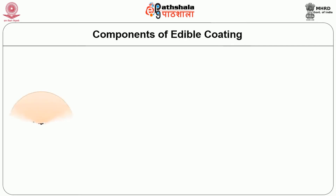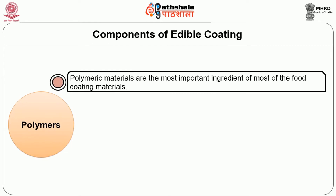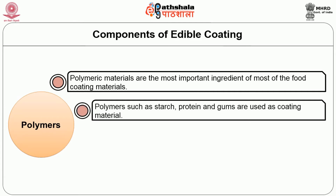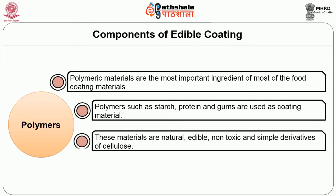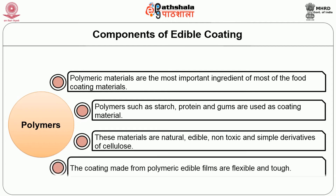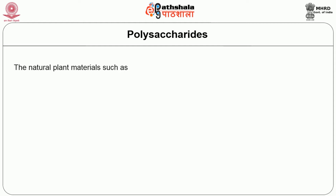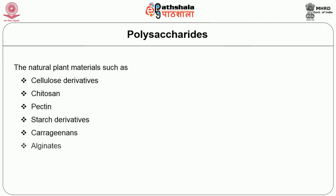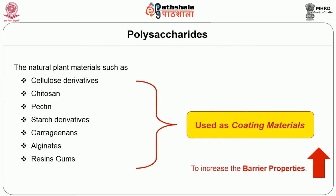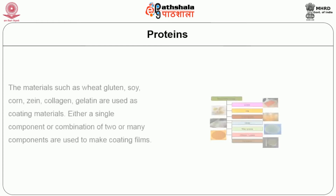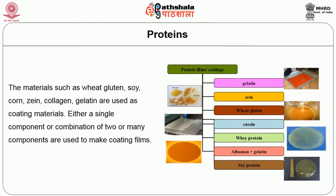Now let us look into the components of edible coating. Polymeric materials are the most important ingredient of most food coating materials. Polymers such as starch, protein, and gums are used as coating materials. These materials are natural, edible, non-toxic, and simple derivatives of cellulose. Coatings made from polymeric edible films are flexible and tough enough. Polysaccharides including cellulose derivatives, chitosan, pectin, starch derivatives, carrageenan, alginates, resins, and gums are used as coating materials to increase barrier properties. Proteins such as wheat gluten, soy, corn, zein, collagen, and gelatin are used as coating materials, either as single components or in combination.